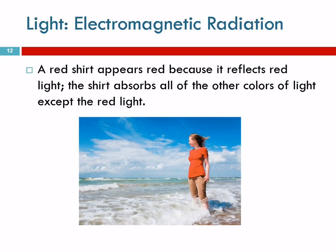So, how do we perceive color? Here we have a picture of a woman standing at the ocean wearing a red shirt. Why is it red? It's red because it's absorbing many of the wavelengths of light and reflecting the red light. The white light from the sun contains all of the wavelengths — much of that is absorbed by her shirt, but the red light is reflected and comes to our eyes, causing a molecular rearrangement in your eyeball that your brain perceives as the color red.